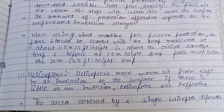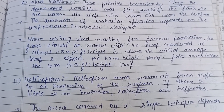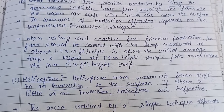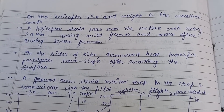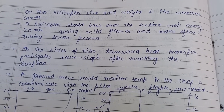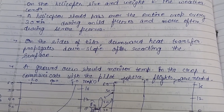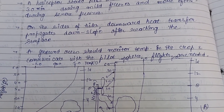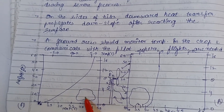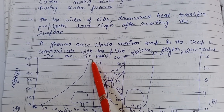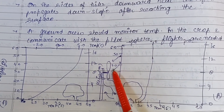Helicopters move warm air from aloft within an inversion to the surface. If there is little or no inversion, helicopters are ineffective. The area covered by a single helicopter depends on helicopter size, weight, and weather conditions. A helicopter should pass over the entire crop every 30 minutes during mild freezes and more often during severe freezes. A ground crew should monitor temperature in the crop and communicate with the pilot where flights are needed. The diagram shows temperature improvement with and without wind machine use.